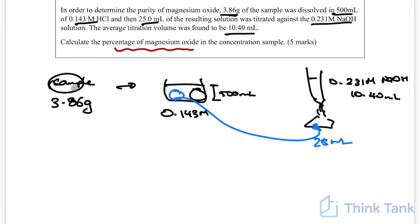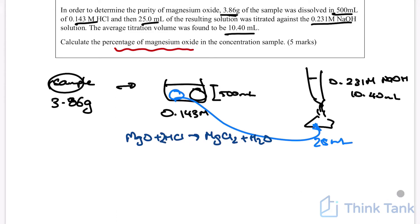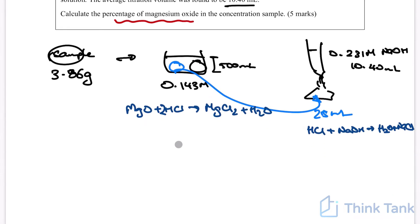Let's write the equations. In reaction one, magnesium oxide reacts with HCl: MgO + 2HCl → MgCl₂ + H₂O. In reaction two, the excess HCl reacts with sodium hydroxide: HCl + NaOH → H₂O + NaCl. With back titration questions, you generally start with the titration calculation and then back-calculate.